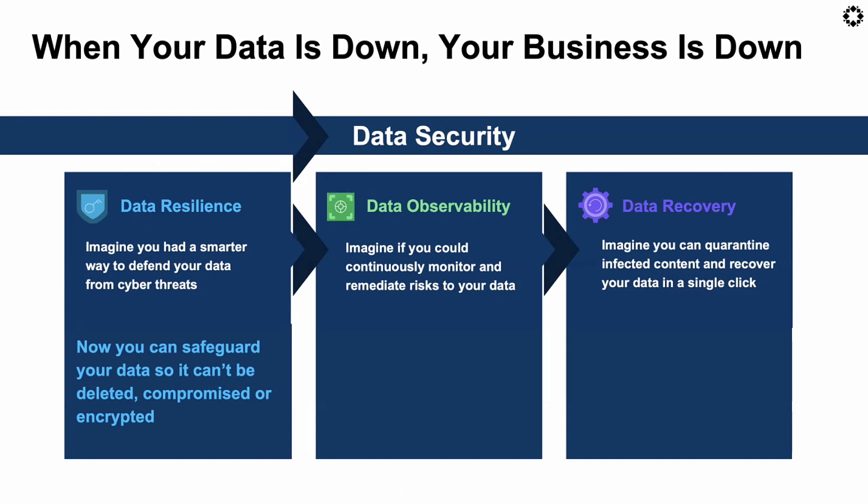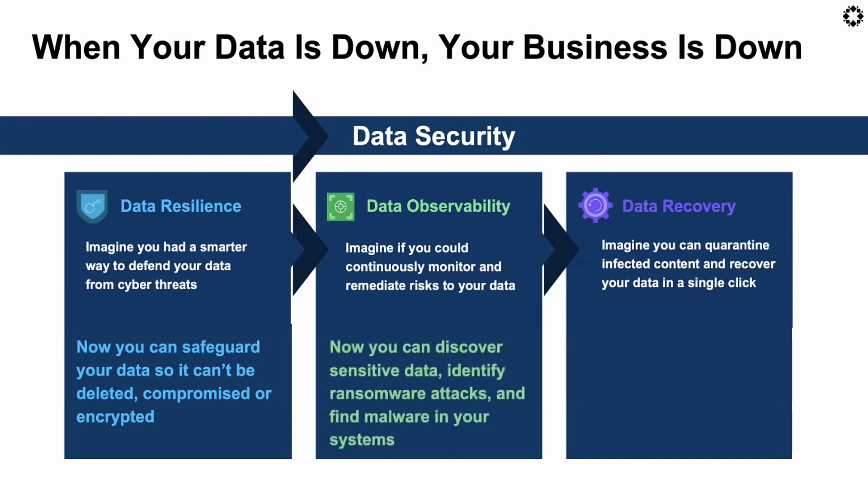On the second piece, observability, there are three facets that we target right now. First: everything has a double extortion risk — every attack. So can you proactively identify, in the context of an attack, what kind of sensitive information is being compromised or who has accessed it? That's a critical piece that the data can alert you on proactively.